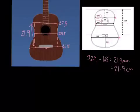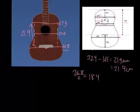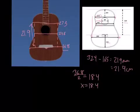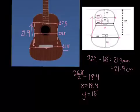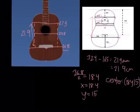Next we need to find the center. In order to find the center, we need to divide 36.8 by 2, and you would get 18.4. So that would be your x part of your center. To find the y, you have to assume that since this part of the guitar isn't exactly in the center, the y portion would be about 15. So your center would be (18.4, 15), which would be about right here.